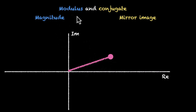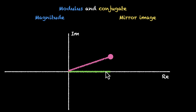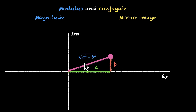Now to figure out the mod or the magnitude, we need to figure out the real and imaginary parts. For this complex number, this is going to be its real part and this is going to be its imaginary part. If they are a and b, the magnitude is square root of a² plus b². This is the mod of this complex number.